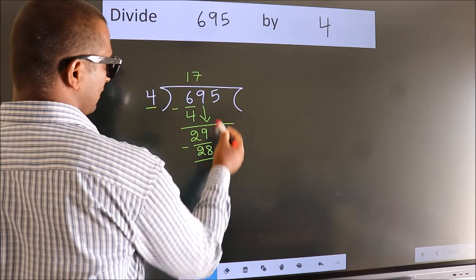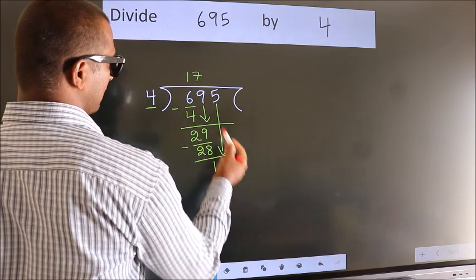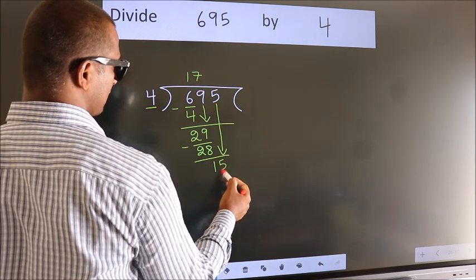After this, bring down the next number. 5 down, so 15.